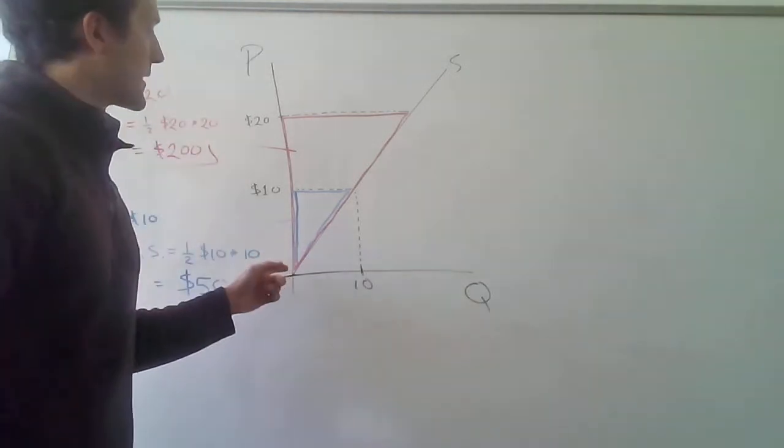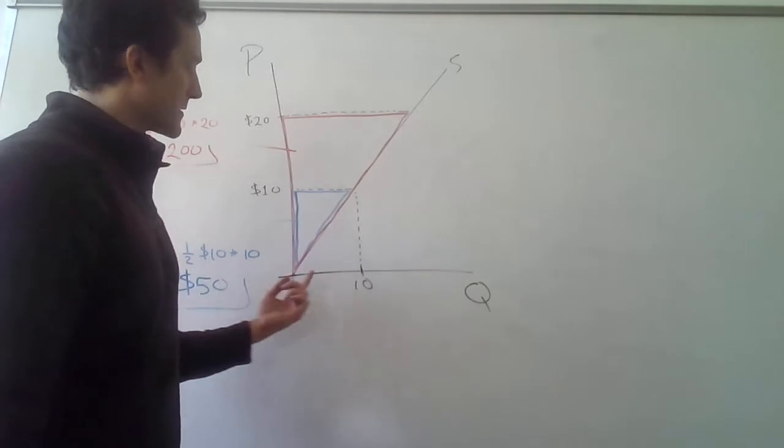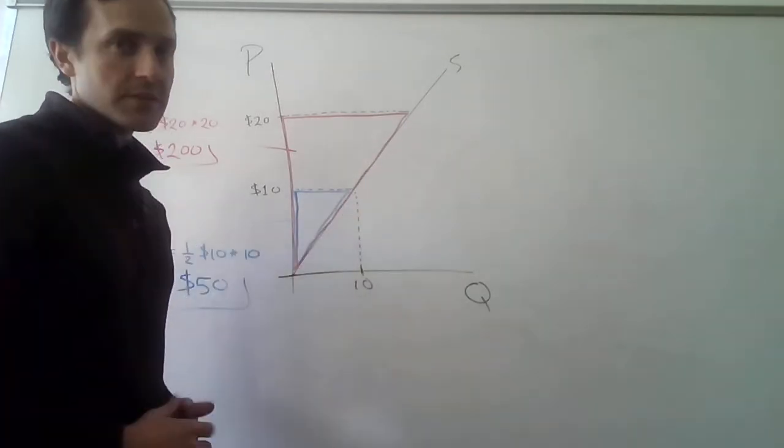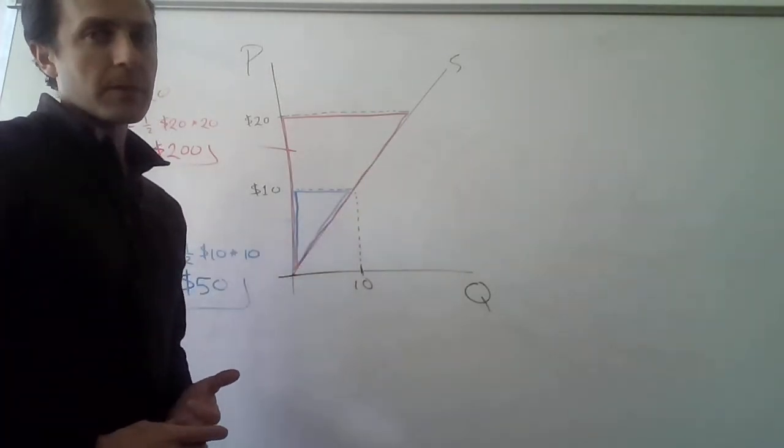I suppose that we have a supply curve that looks like this, it has a slope of 1 starting at the origin, and what we want to do is figure out